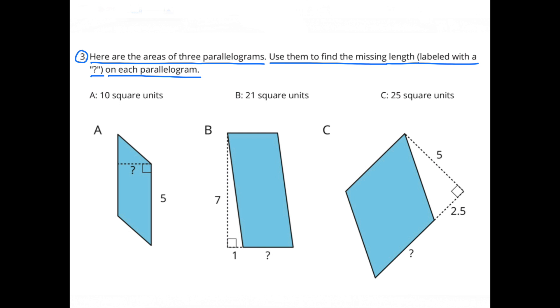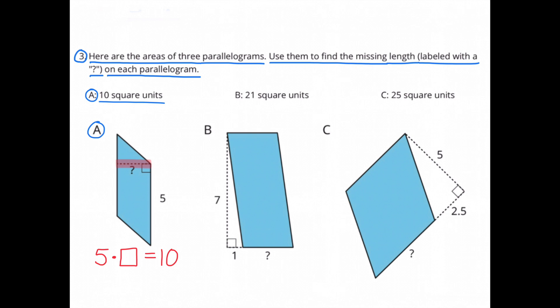Number 3. Here are the areas of three parallelograms. Use them to find the missing length, labeled with a question mark, on each parallelogram. Figure A has an area of 10 square units, the base is 5, and the height is unknown. 10 divided by 5 equals 2, or 5 times 2 equals 10.